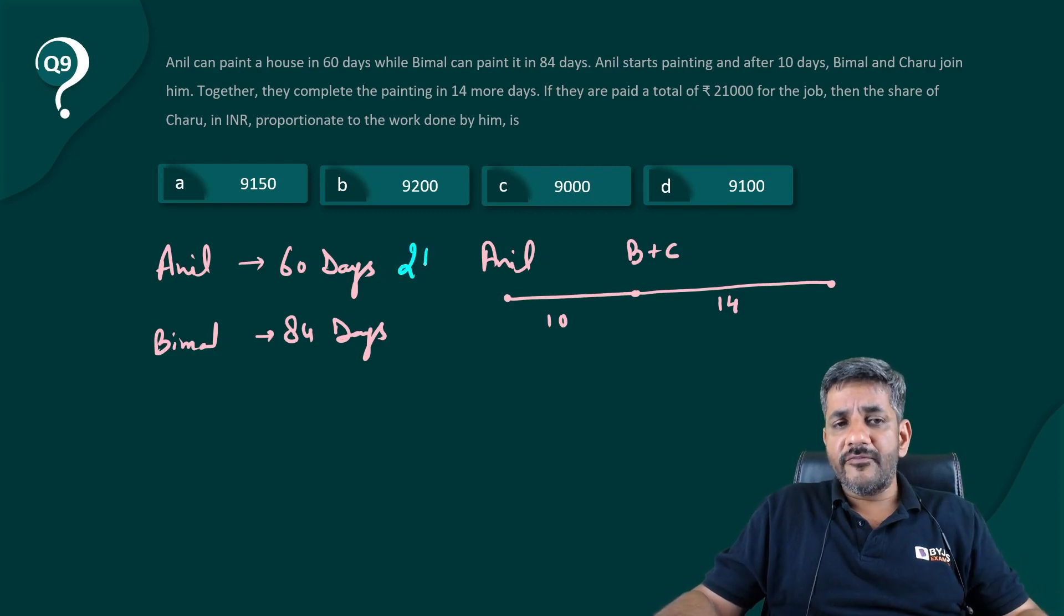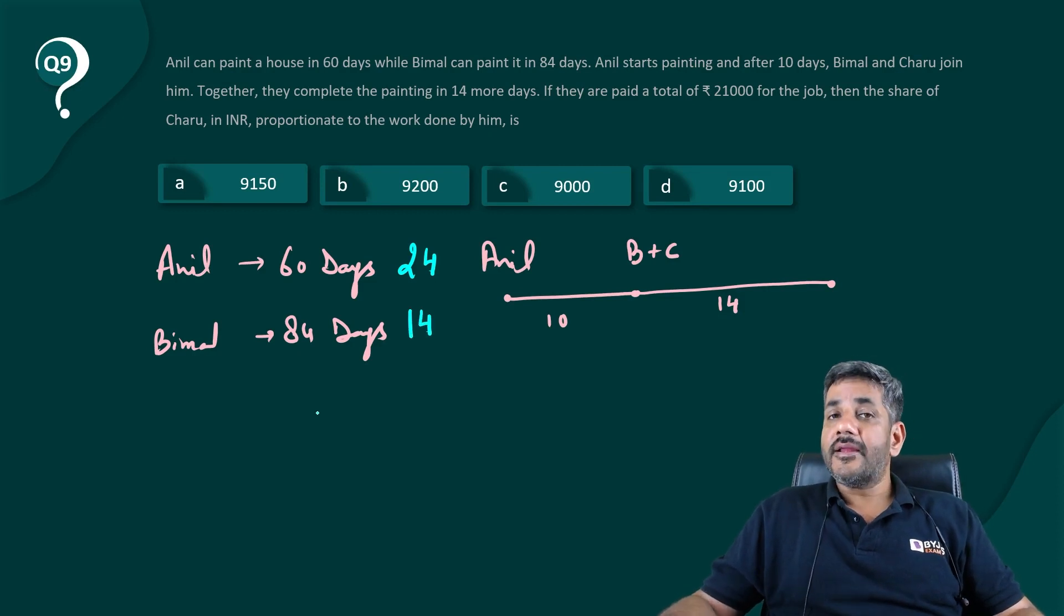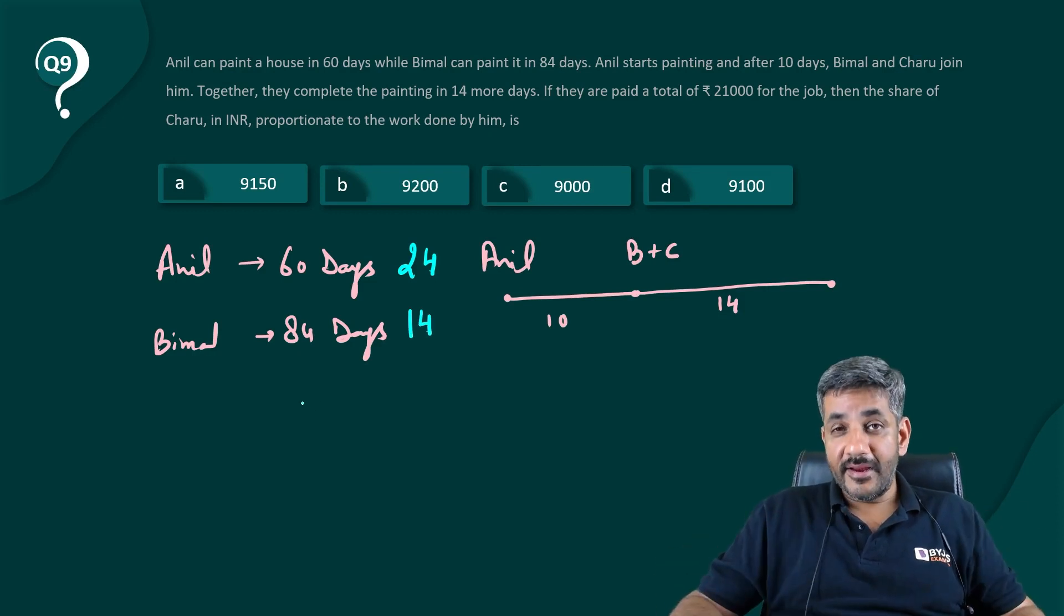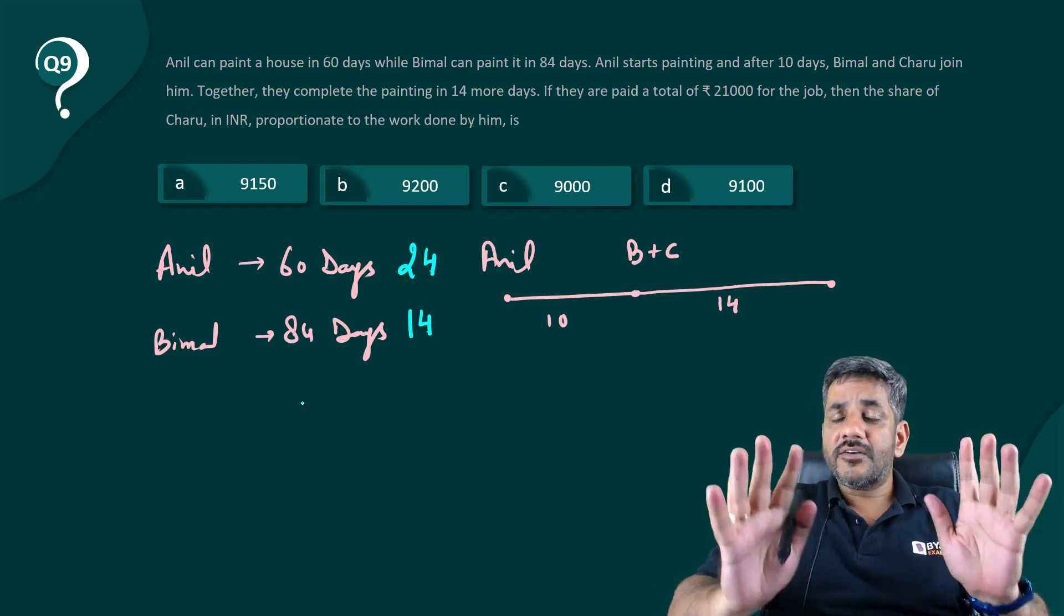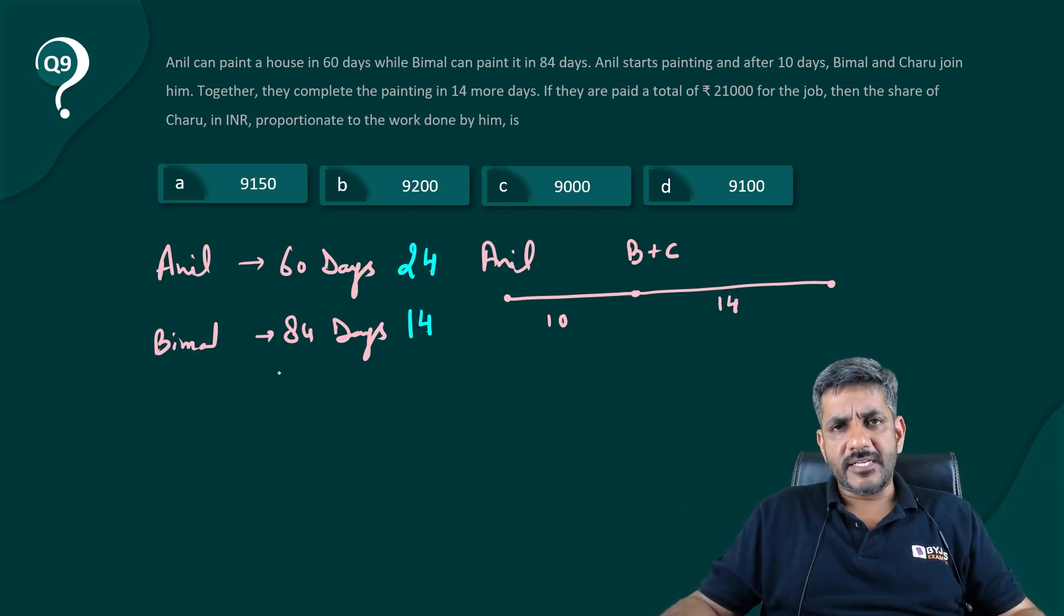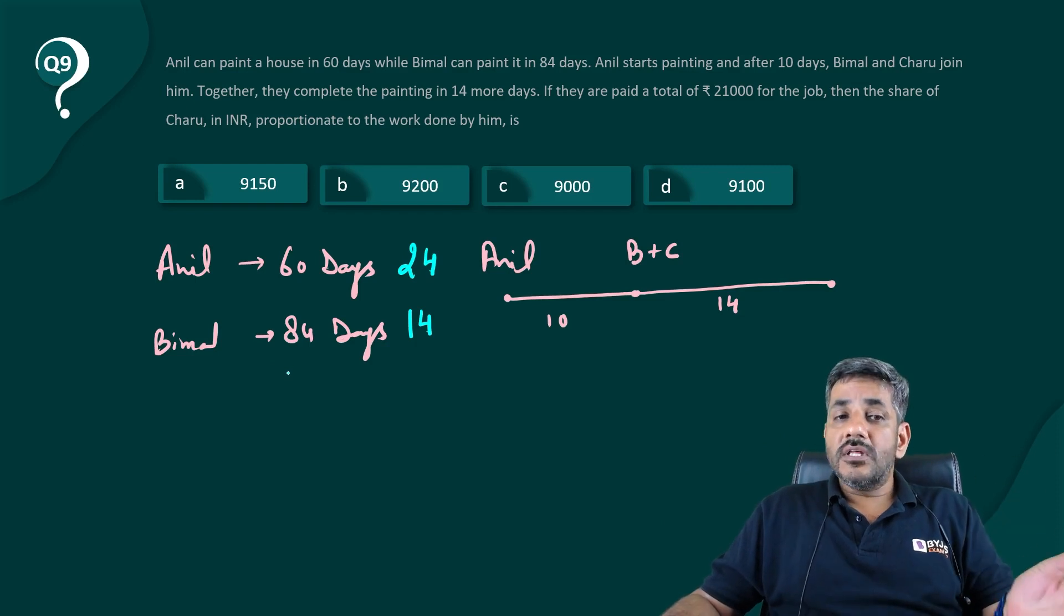So can I say Anil actually worked for a total of 24 days? Bimal worked for a total of 14 days. I hope you are getting my point.